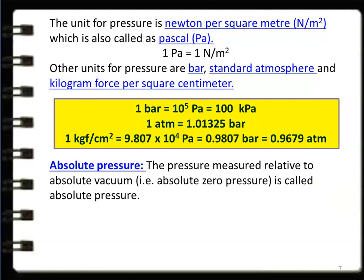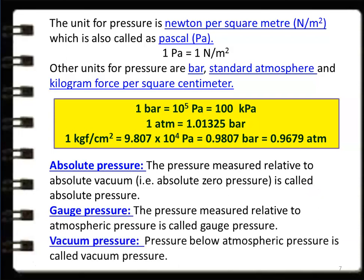There are three pressures of interest: absolute pressure, gauge pressure, and vacuum pressure. The pressure measured with reference to atmospheric pressure using a pressure measuring instrument is called gauge pressure. When the pressure is below atmospheric pressure, it is called vacuum pressure. For absolute pressure, the reference is absolute zero.